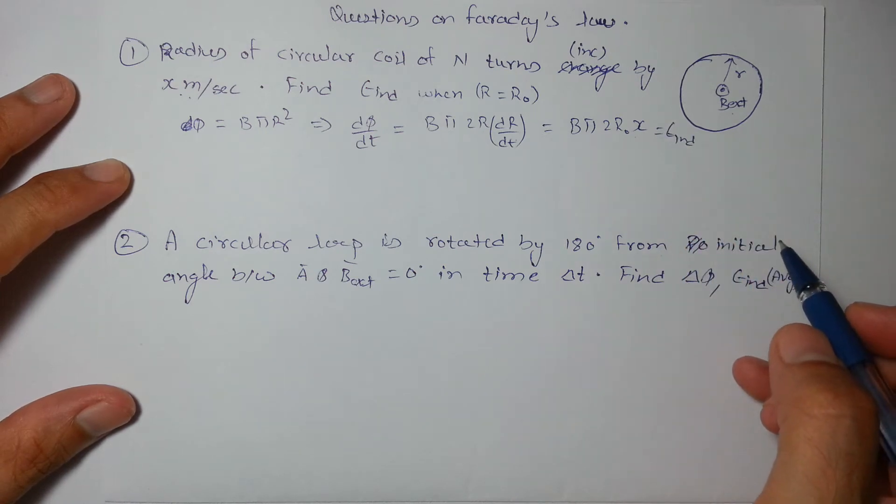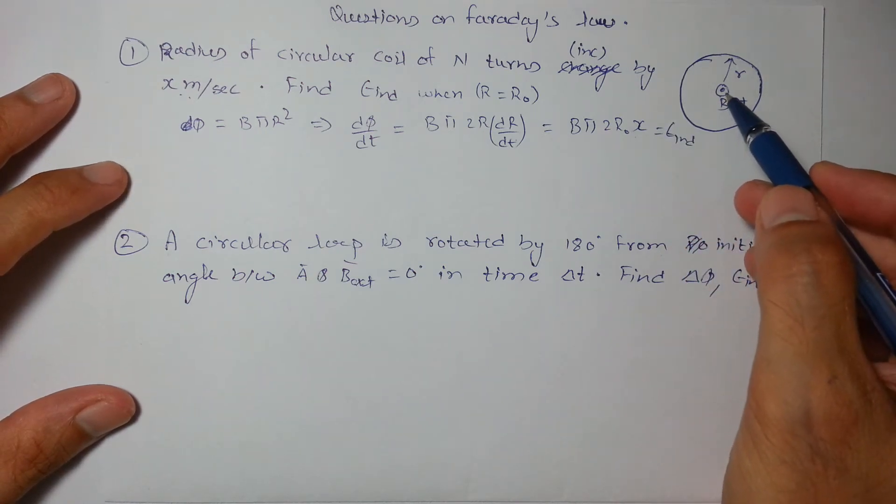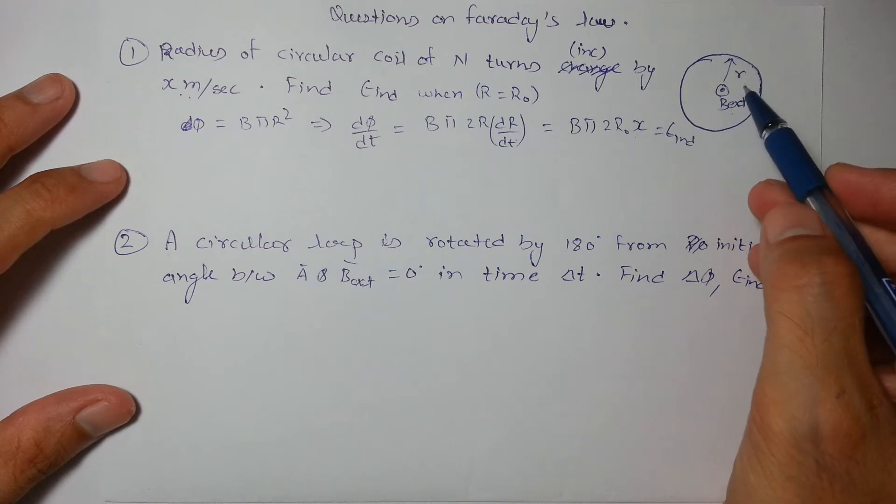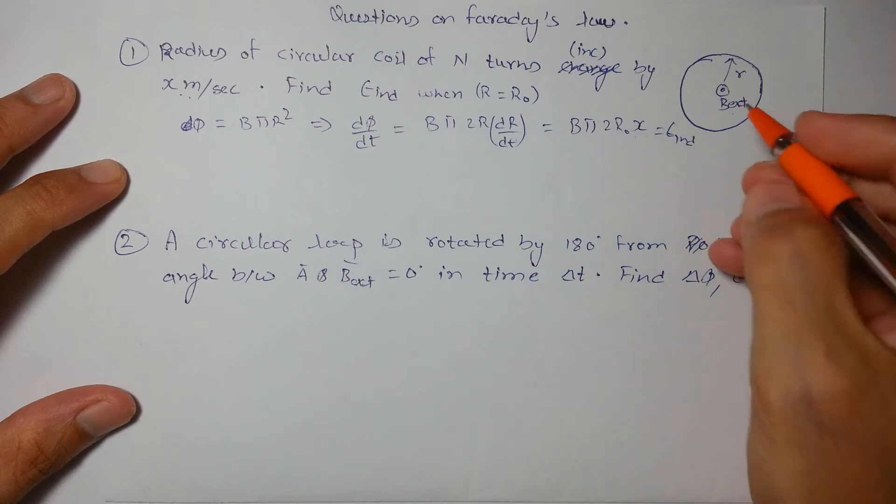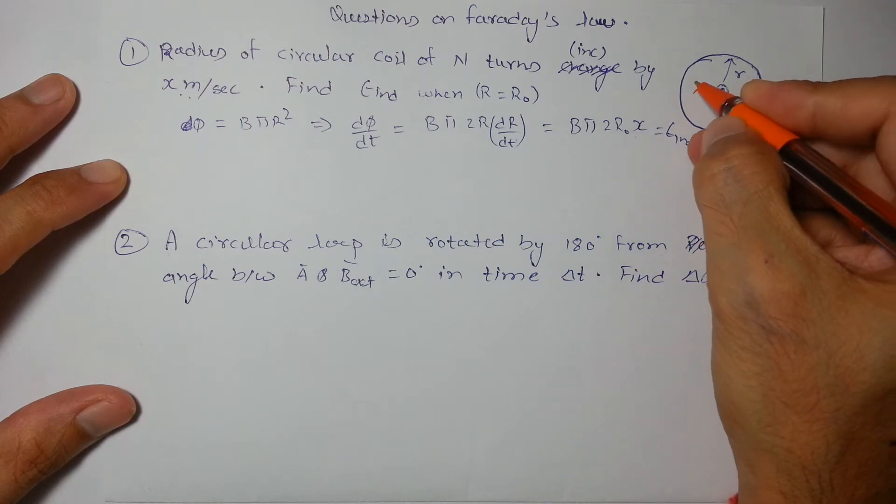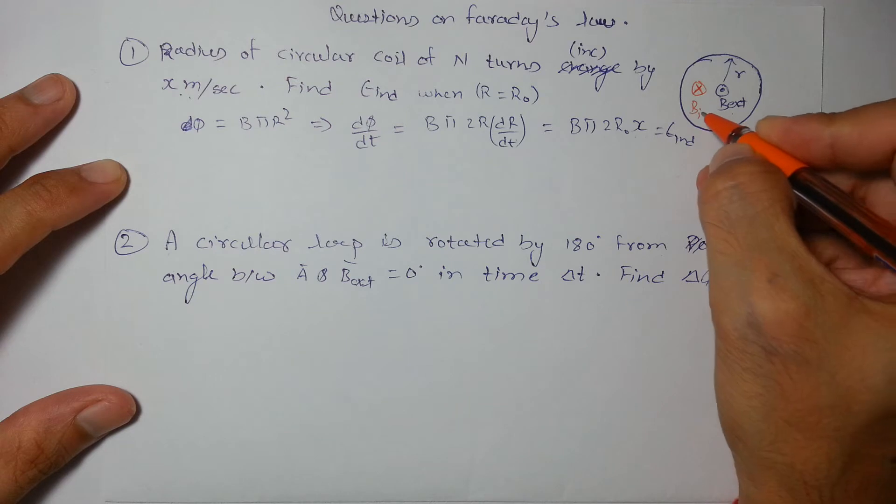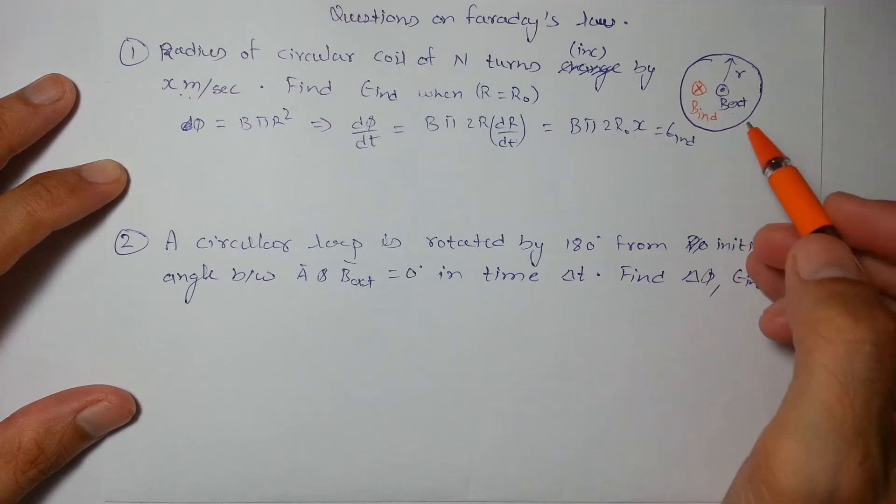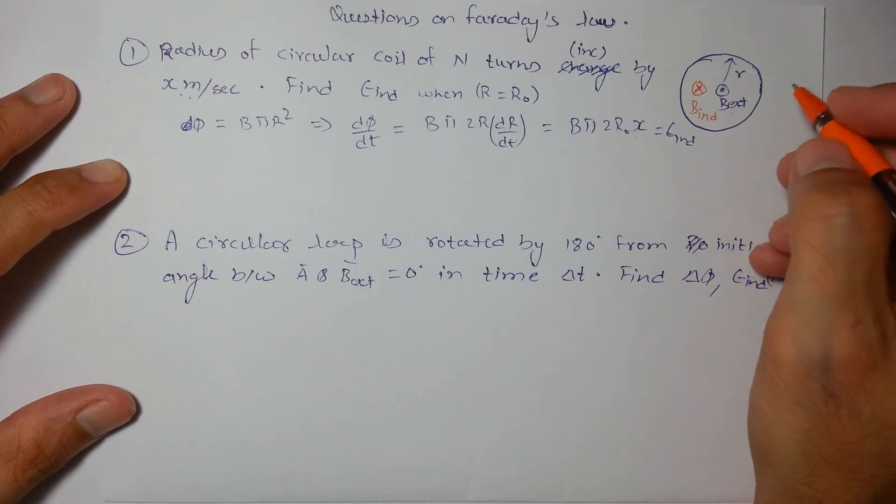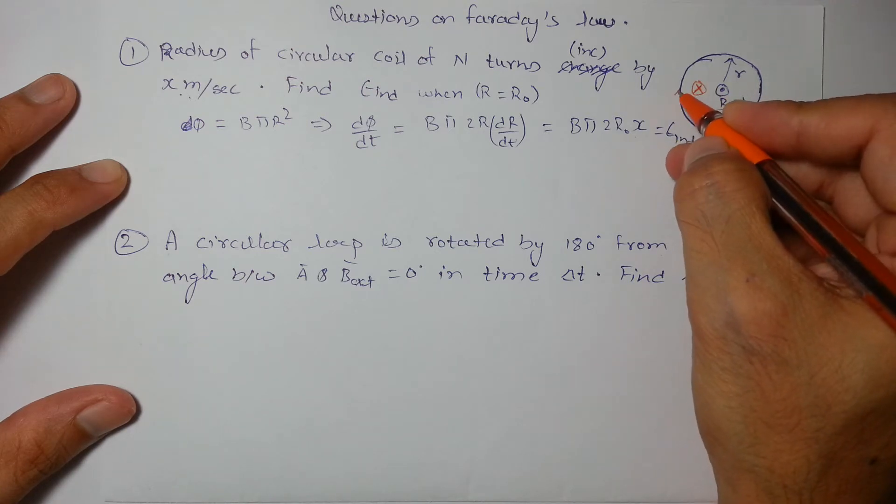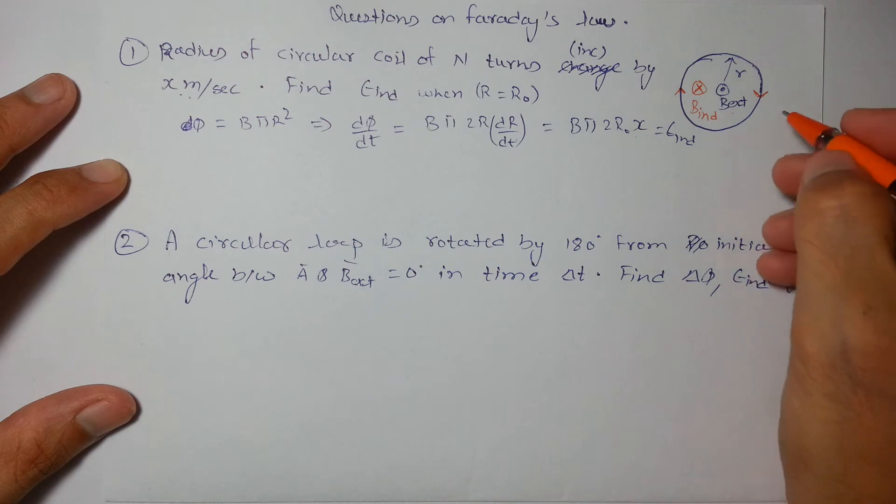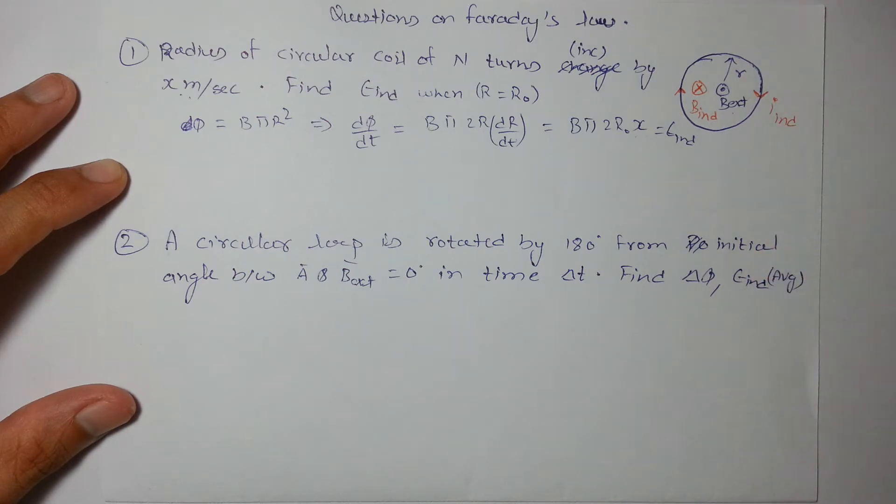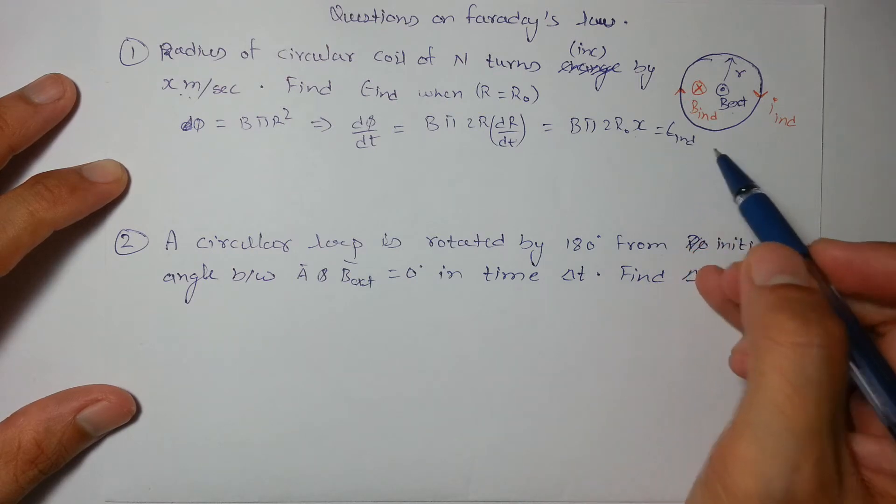Now let's talk about the direction. As the radius is increasing so the flux is increasing and field is outward, so we can say the induced field must be inward. B induced must be into the plane of paper. For that the current should be in clockwise direction. So i induced will be in clockwise direction or we can also say that the induced EMF is clockwise.